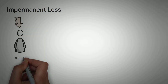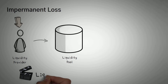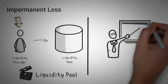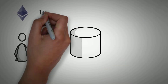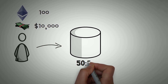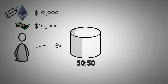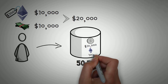First off, impermanent loss only happens to people who provide liquidity to a liquidity pool. If you have no idea what a liquidity pool is, you'll need to watch our video on how liquidity pools work to fully understand this topic, because it can get complicated very quickly. Secondly, impermanent loss is easiest to explain through examples, so we're going to go through two examples in this video. Let's say you put up 100 Ethereum and $10,000 into a liquidity pool. Most liquidity pools want there to be a 50-50 ratio whenever you initially start your deposit, so we can reasonably assume the price of one Ethereum at this point in time is $100. So there's $10,000 worth of a stablecoin and $10,000 worth of Ethereum that you are putting into this liquidity pool, for a total of $20,000, hoping to gain a profit on some of the fees that will happen within the pool.